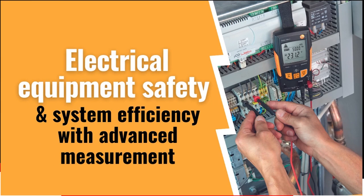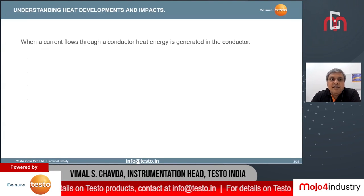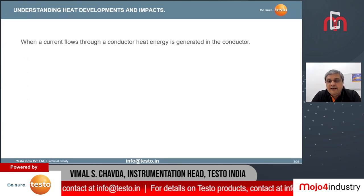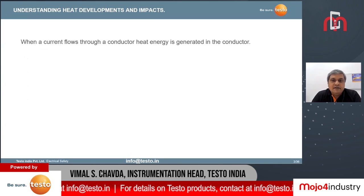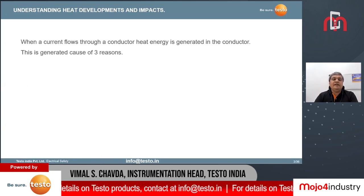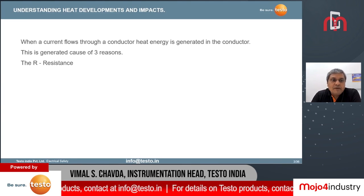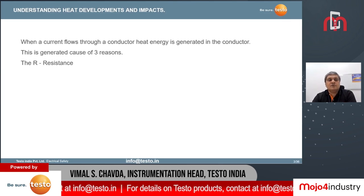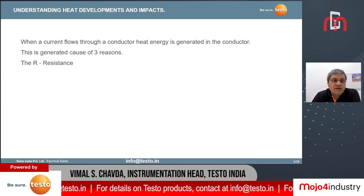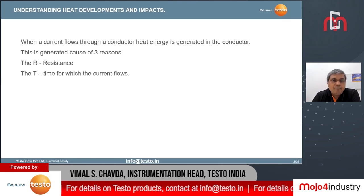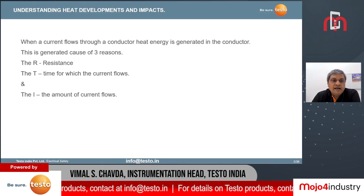What happens primarily when electric current flows through a conductor or any media is it generates heat inside the conductor. That is the reason you need to have the right kind of conductor based on the design. This heat which is generated is caused because of three things: one is the resistance, another is the time for which the current is flowing, and third is the amount of current that is flowing.